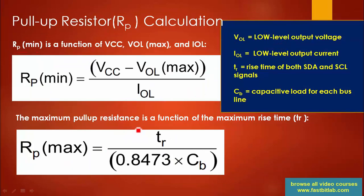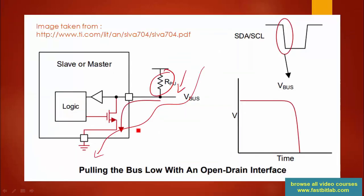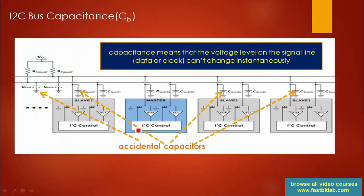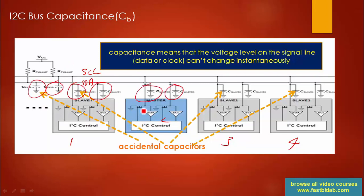Now, what exactly is bus capacitance? Capacitance means the voltage level on a signal line can't change instantaneously. Consider an I2C bus with SCL and SDA lines and four devices connected. Even without explicitly connected capacitors, accidental — or parasitic — capacitors exist. These parasitic capacitors resist the signal and become a hurdle for it to rise from zero to the high state. So when calculating the pull-up resistance, you must take bus capacitance into account.